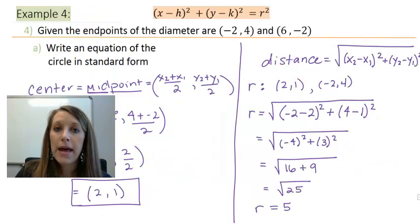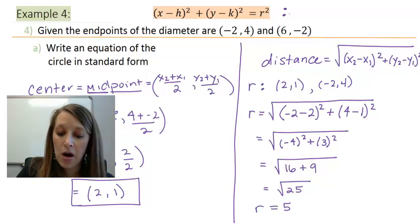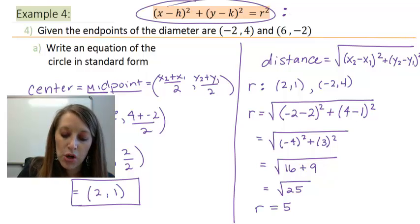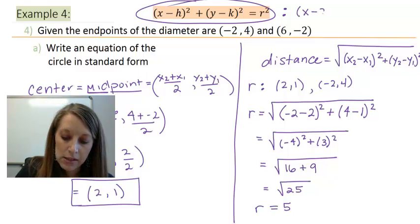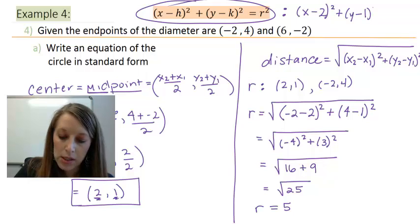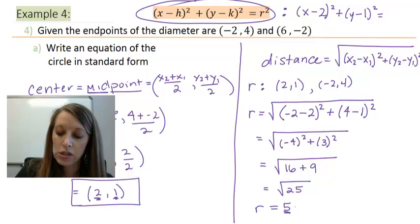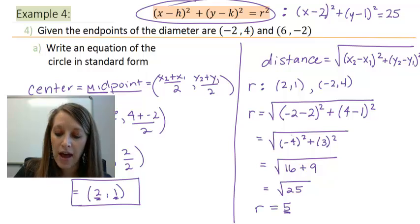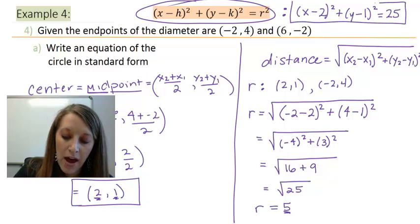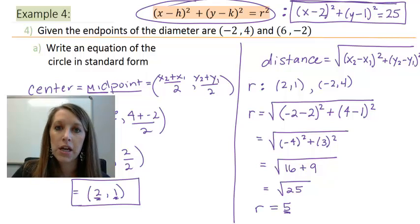So since I have my center and my radius, I am perfectly capable of coming up with the equation of the circle. I'm going to do it up here on top basically because I'm out of room. So I plug my center in for (h, k) and I plug my radius in for r. So my equation is (x - 2)² + (y - 1)² = 5², or my radius squared is 25. So this is my final equation of this circle in standard form.